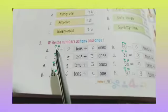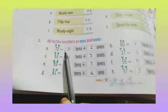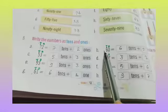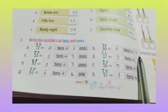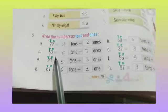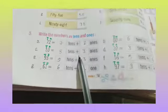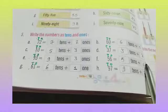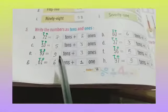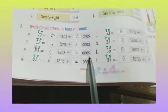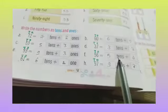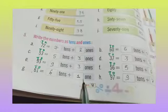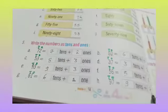So we will repeat once again: 72 equals 7 tens plus 2 ones. 60 equals 6 tens plus 0 ones. 53 equals 5 tens plus 3 ones. 37 equals 3 tens plus 7 ones. 93 equals 9 tens plus 3 ones. 56 equals 5 tens plus 6 ones. 61 equals 6 tens plus 1 one. 97 equals 9 tens plus 7 ones.